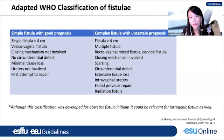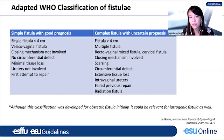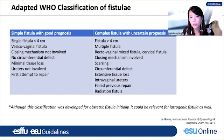By contrast, a complex fistula is over 4 cm, may be multiple, sometimes includes rectovaginal and cervical fistula, closing mechanisms are involved, there is scarring or circumferential defect, extensive tissue loss, intravaginal ureters, prior failed repairs, or a context of radiation therapy. This WHO classification is widely used and practical — it was developed for obstetric fistula but is relevant for iatrogenic fistula. Classification is important to standardize terminology, ensure complete diagnosis, plan repair, and appropriately inform patients regarding prognosis.